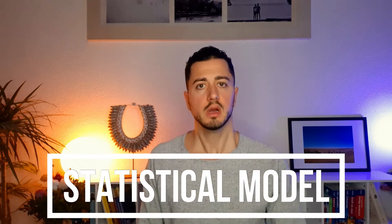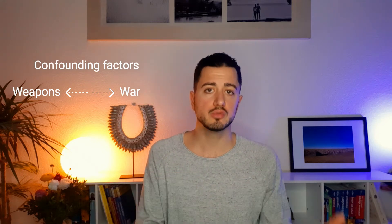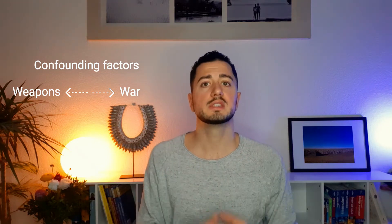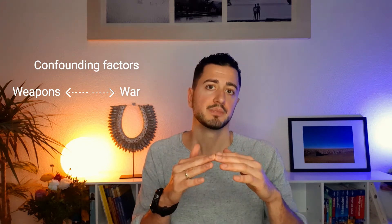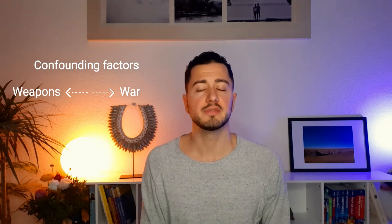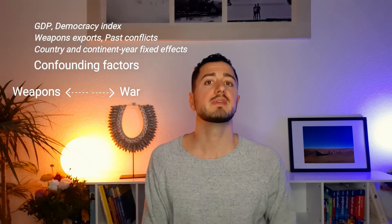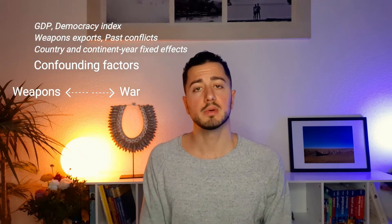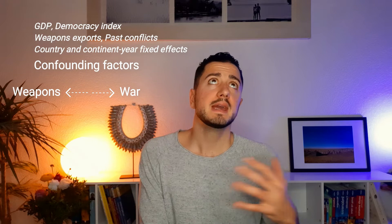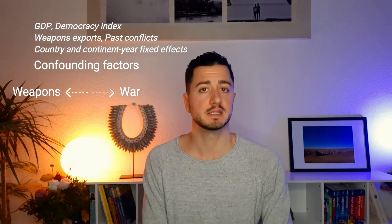Let me explain how I approach the problem statistically. When you try to assess the effect of weapons on war, there are potentially other factors that influence both variables simultaneously. Those are called confounding factors, and we have to control for them — meaning we disentangle those effects to obtain a clean estimate of the relationship between weapons and war. For example, GDP might be one such confounding factor: GDP is positively associated with weapons imports because less financially constrained countries can import more weapons, but GDP is also negatively correlated with conflict, so we have to get rid of this effect that might bias the estimate.